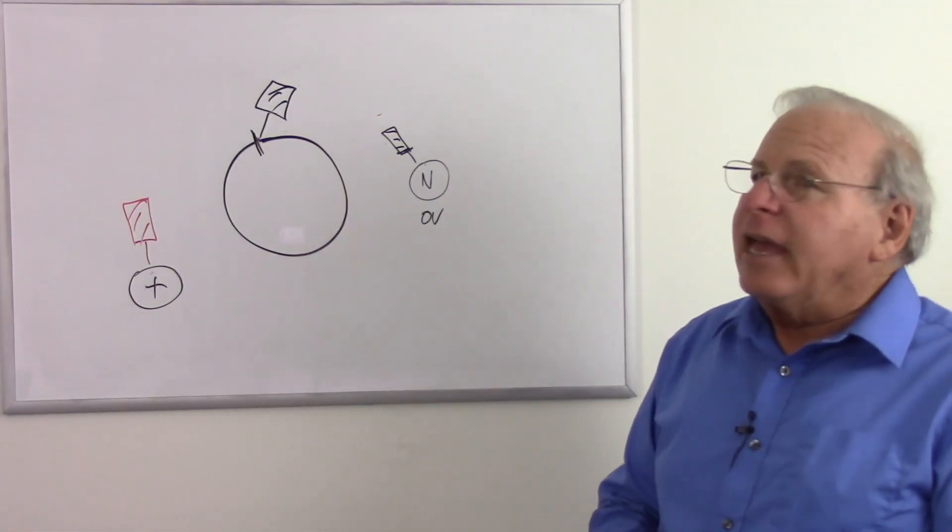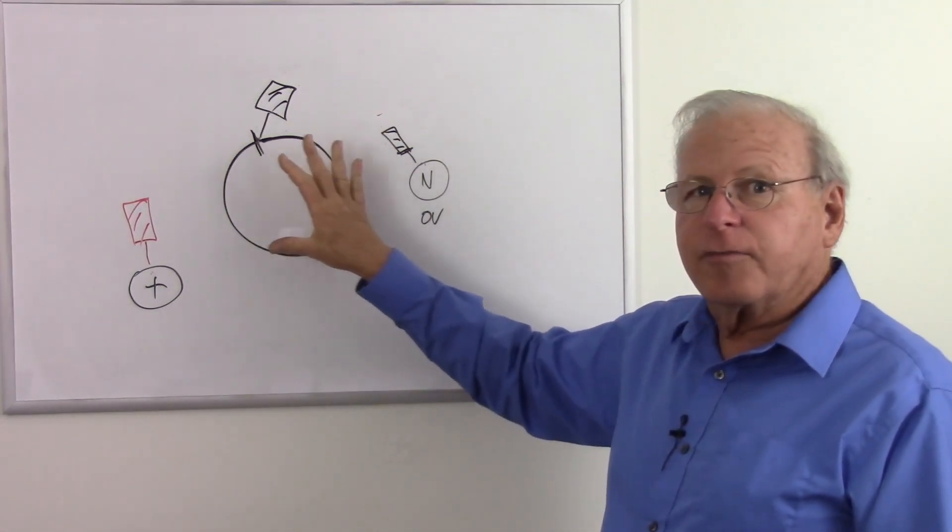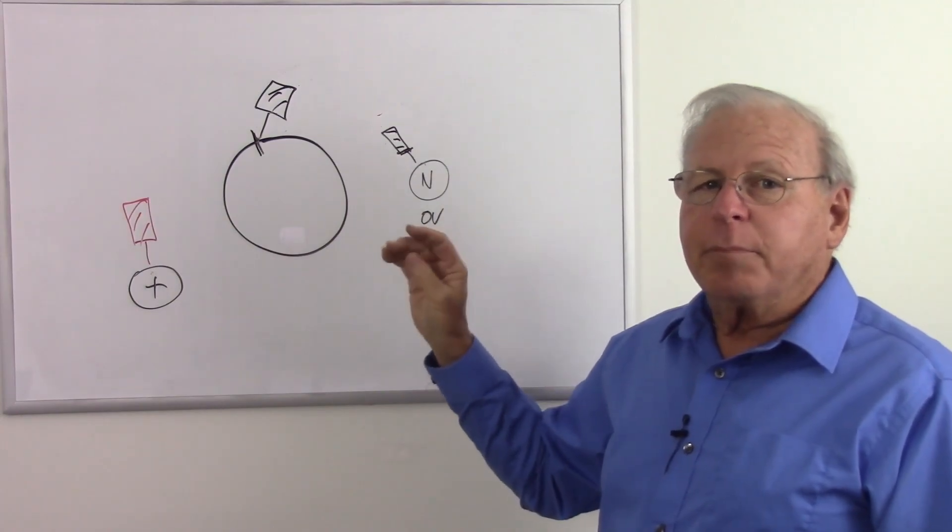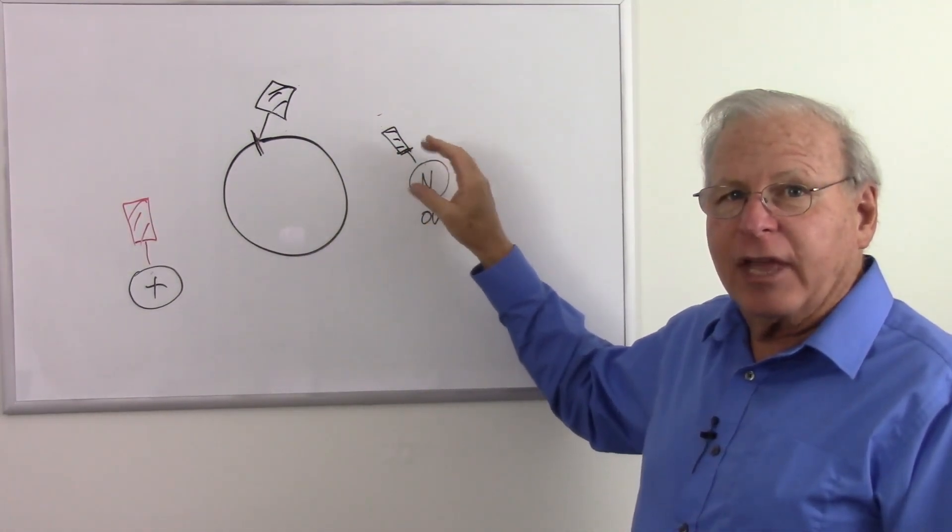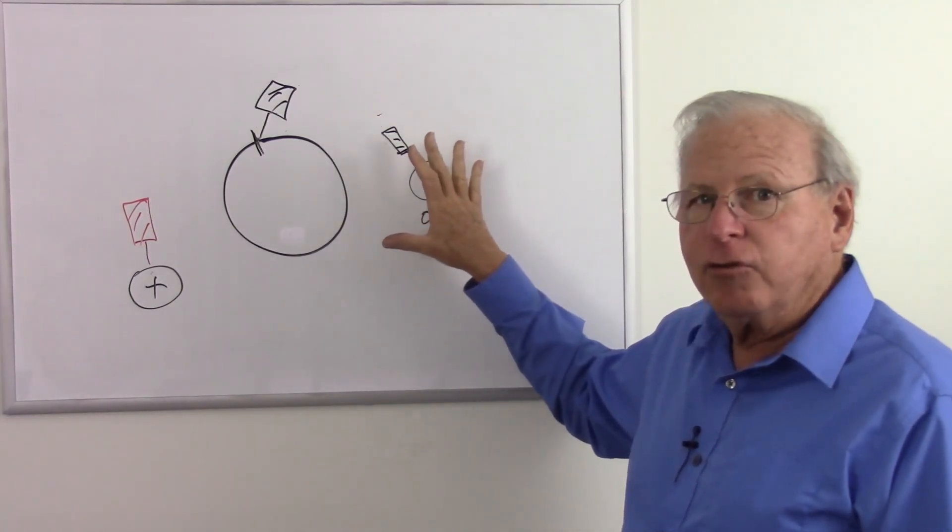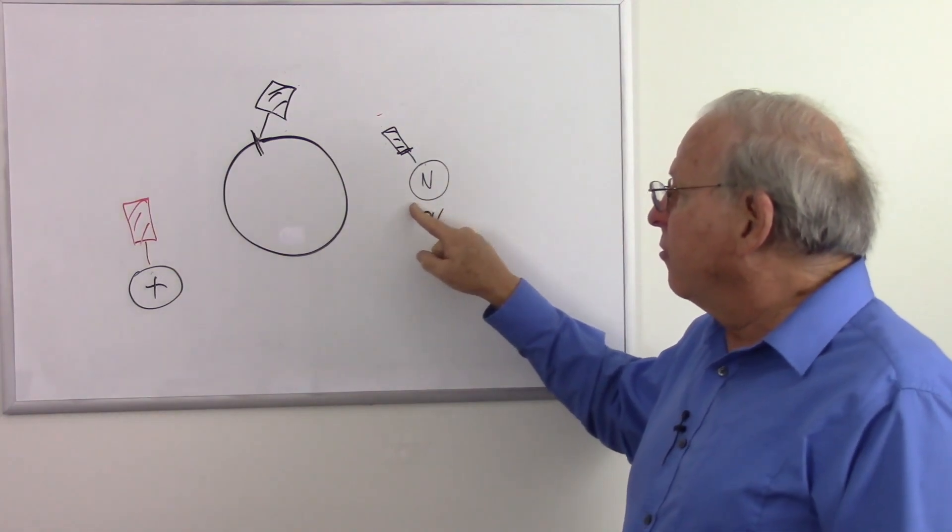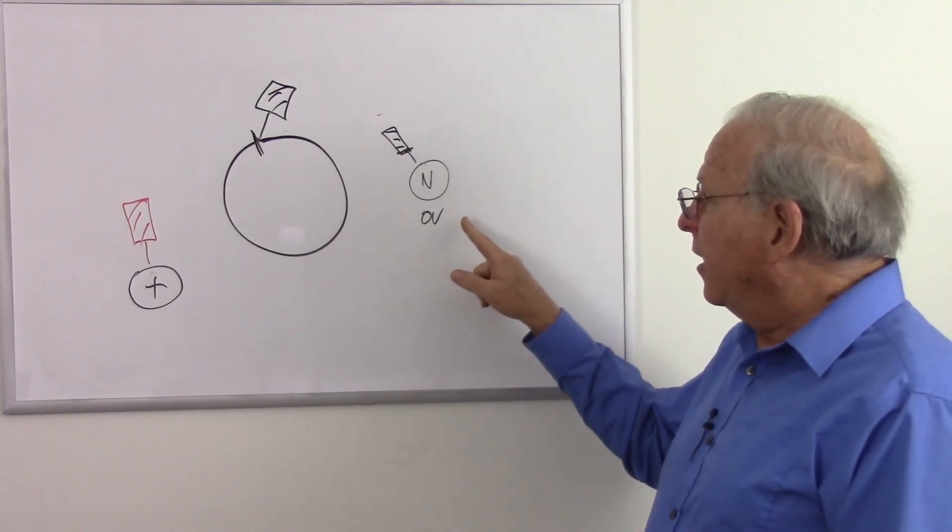So if people say that the Earth is negatively charged because it has an excess of electrons, they are implying that we're comparing that to a neutral body that has a balance of protons and electrons and therefore is electrically neutral. But is electrically neutral zero volts? Remember that zero volts has never been scientifically defined.